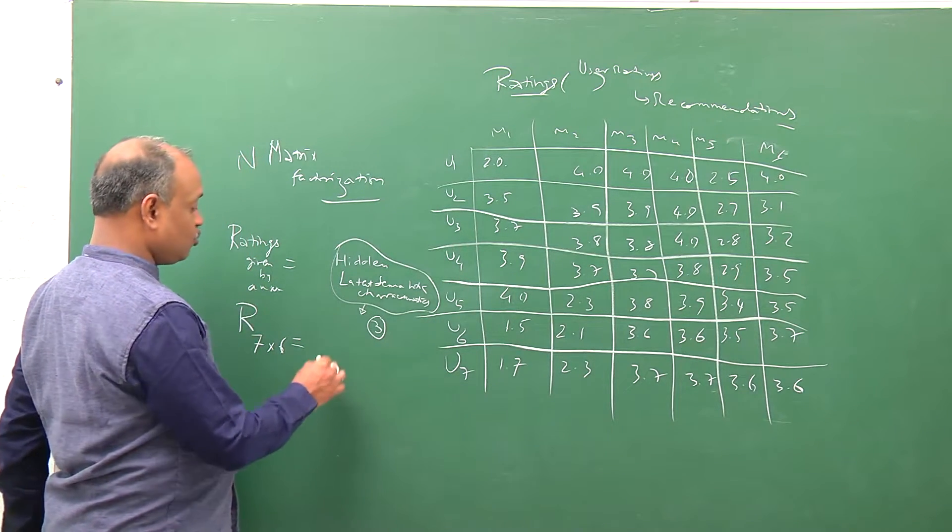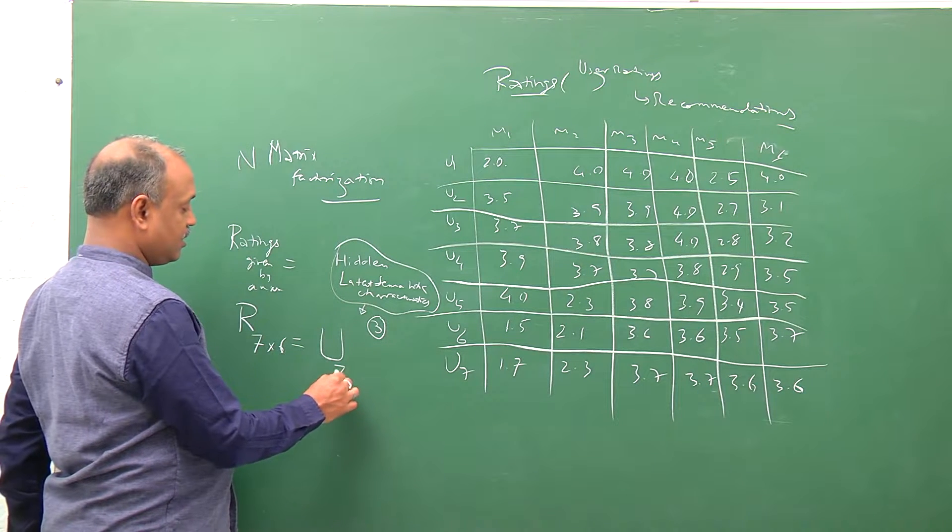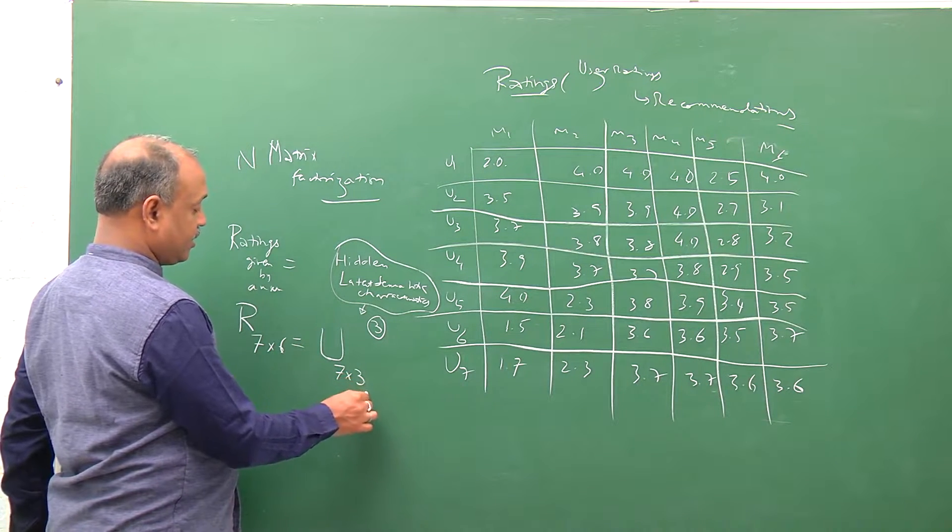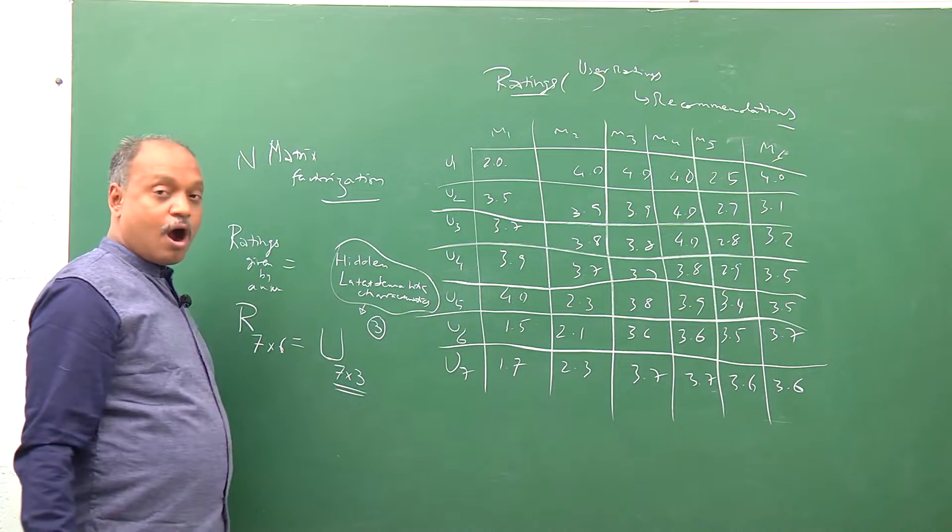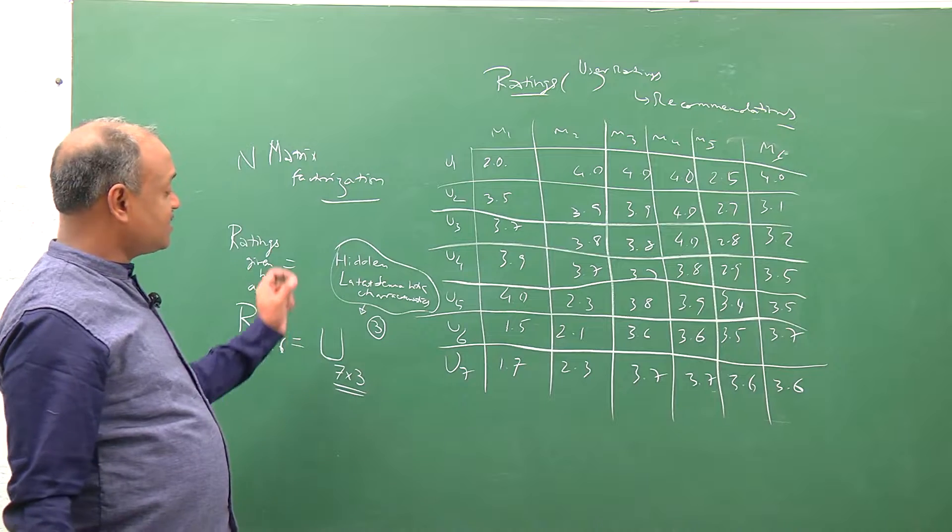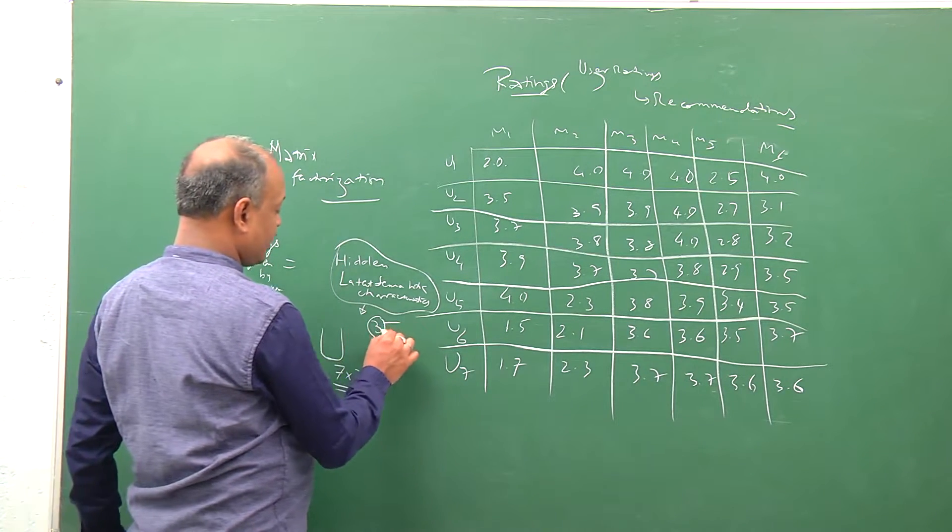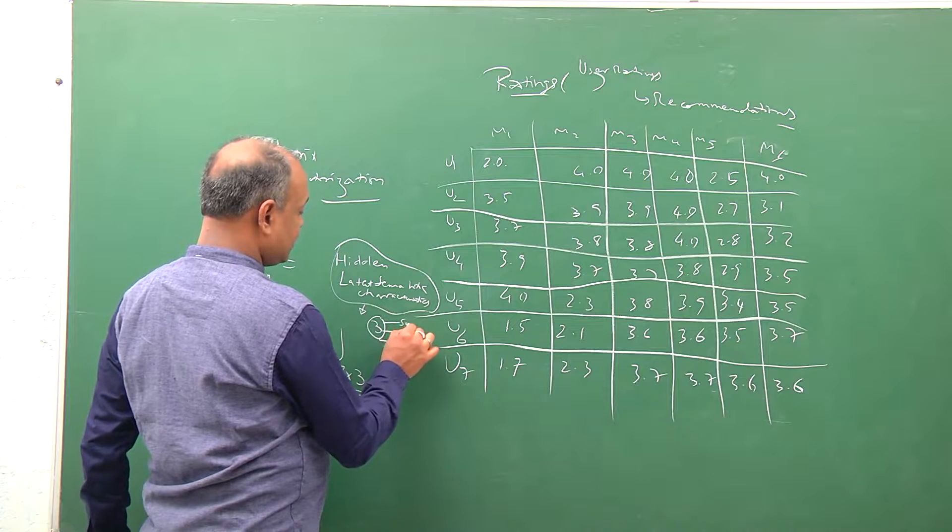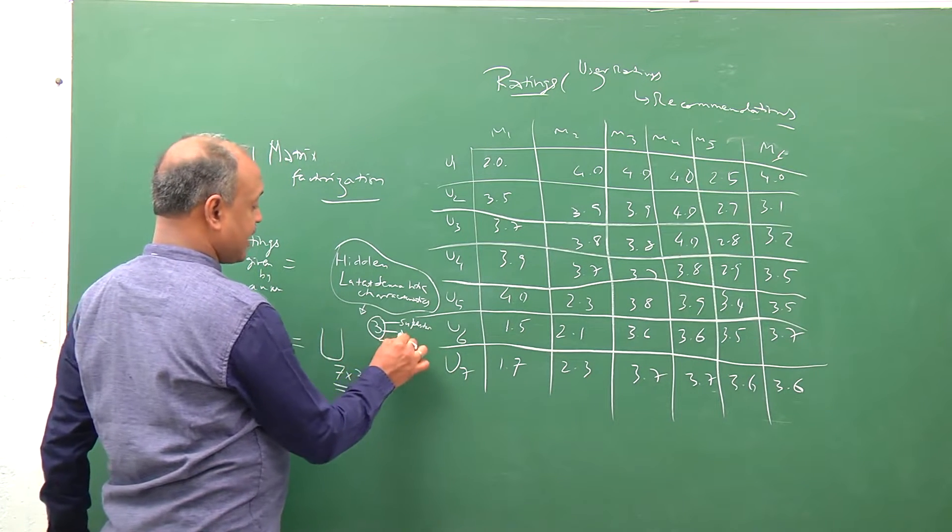Then we break this into two parts. First one, the matrix representing how much each user likes specific characteristics of the movie. Let's name them, for example: does it have a superstar like Amitabh Bachchan, is it an animated movie, or does it have fights in the movie?